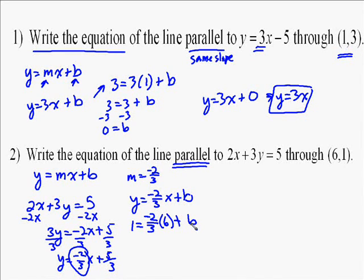So negative 2-thirds times 6 is the same as negative 12 over 3, which would be negative 4. So you end up with 1 equals negative 4 plus b. Solving for b is very simple now, just add 4 to both sides, and you get b equals 5. So your solution is y equals negative 2-thirds x plus 5.